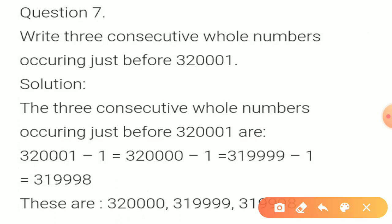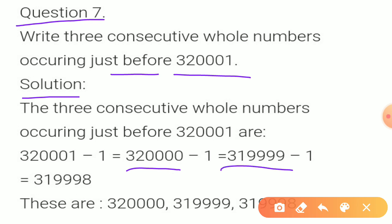Now question 7: Write 3 consecutive whole numbers occurring just before 3,20,001 — that is, the 3 consecutive whole numbers that come just before it. To find 3 numbers before the given number, we subtract 1 each time: 3,20,001 minus 1 is 3,20,000, then 3,19,999, then 3,19,998. These are the three consecutive whole numbers that come before 3,20,001.